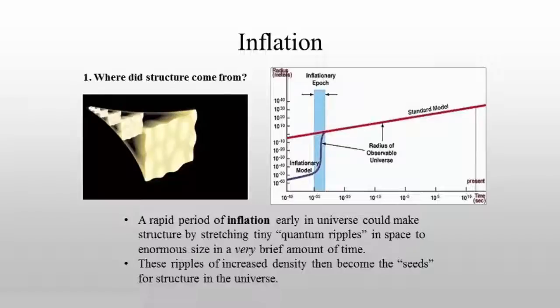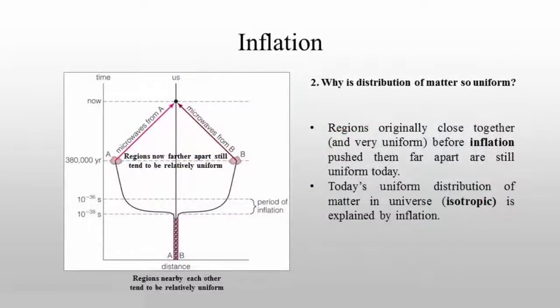Inflation gives us some explanation of how structure may have begun. Consider early regions of the universe very, very close together — they would be relatively uniform and able to mix together, with no dramatic differences. But if inflation pushes them apart, they could be at great distances from each other while still remaining very uniform. That's what we see in today's universe — the distribution of matter is very uniform, which scientists call isotropic. Inflation helps explain this: had there been no inflation, the universe would have had time for different regions to change significantly, but the great burst of inflation prevented that.